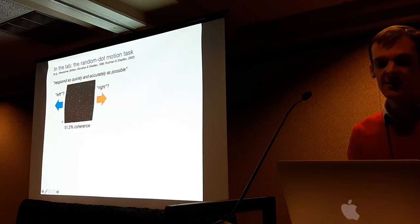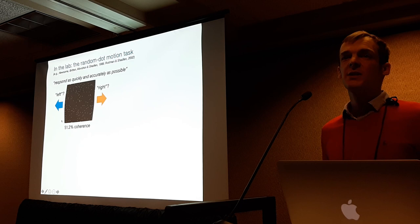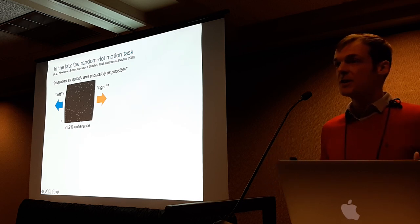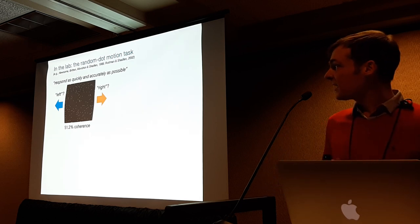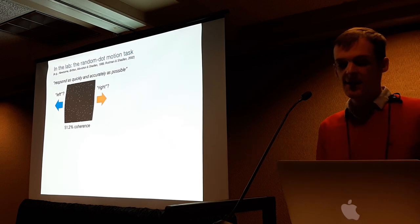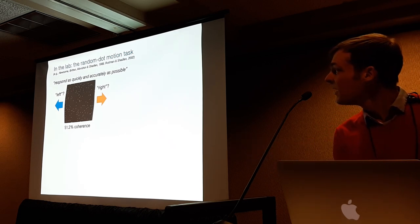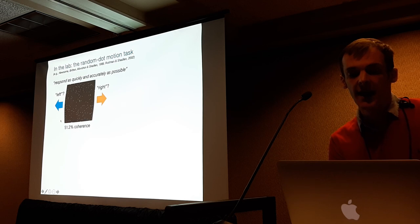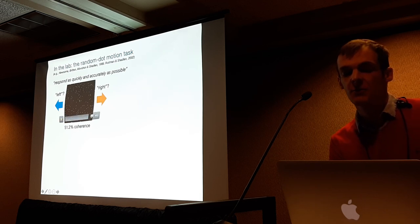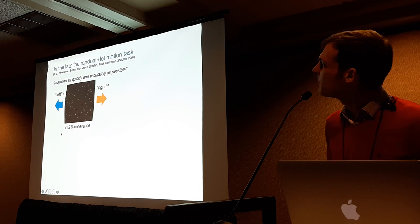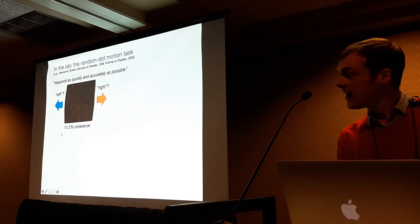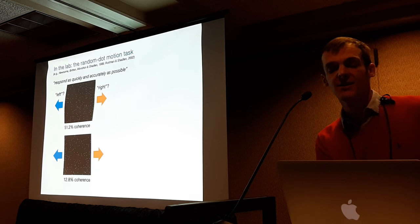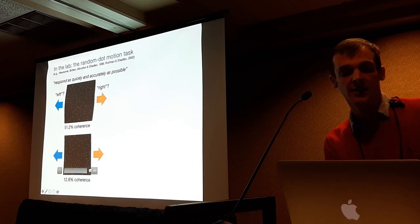In this task, you've got a set of dots that are mostly moving randomly, a subset of which — known as the coherence — is moving in one of two target directions, in this case left and right. In this example, the dots are moving with a high coherence, so a large fraction of dots are moving in one of the target directions. They're actually moving towards the right. If you lower the coherence, you can make the decision actually harder.